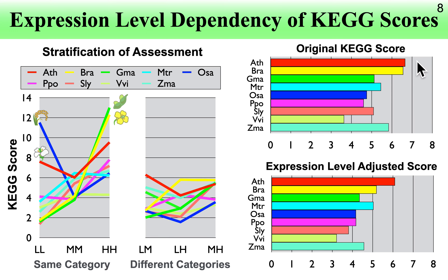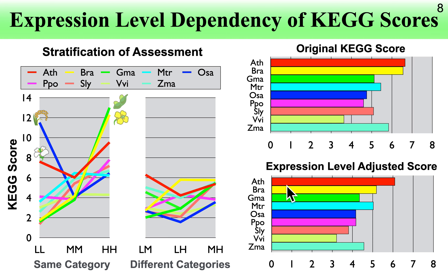To reduce the effect of these biases, we now propose an expression-level adjusted score, which is simply the average of the stratified assessment results across all six expression-category pairs. Because our focus is not only highly expressed genes but also low- and medium-expressed genes, the average of these six KEGG scores is a reasonable expression-level adjusted score. With this proposed score, Arabidopsis thaliana is apparently better than the other species, which is reasonable since it is the primary model species in plant biology and has a larger number of RNA-seq datasets.